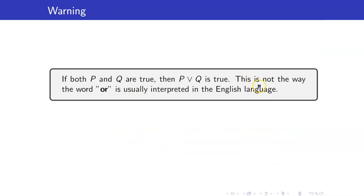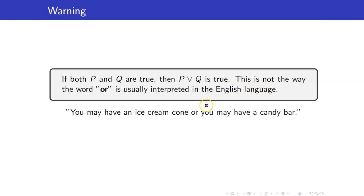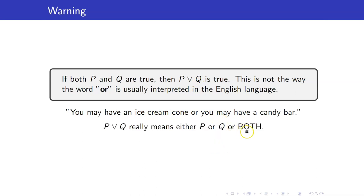This is not the way that the word 'or' is usually interpreted in the English language. For example, if I say 'you may have an ice cream cone or you may have a candy bar,' in English we mean you can only have either one. However, for the mathematical 'or,' we mean one of the two or both — P or Q or both.